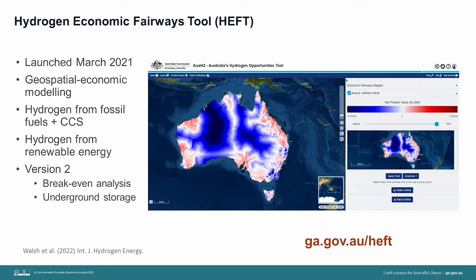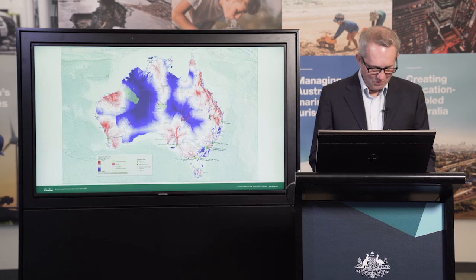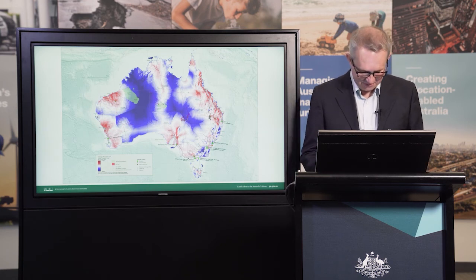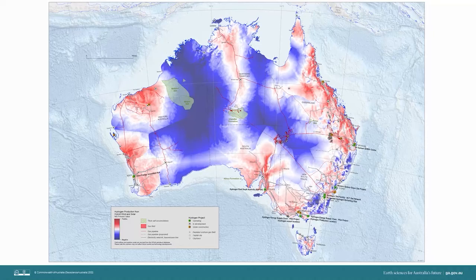Version 3 is not far away. It will include export products such as ammonia and liquid hydrogen and customisable operating and capital cost sliders for hydrogen production, based on feedback from industry. We can add more data to the HEFT analysis to build up a rich picture for this new industry and where new infrastructure is required. The underlying map is the scenario from HEFT for a hybrid wind and solar production scenario and sending hydrogen to export. Red areas are profitable, blue areas are unprofitable and white is the break-even analysis for this example. What's very encouraging is that the announced hydrogen projects are mostly appearing in our red areas, suggesting that our model is not too bad.